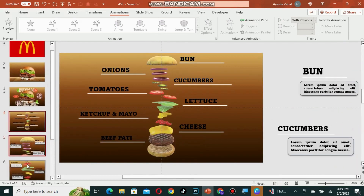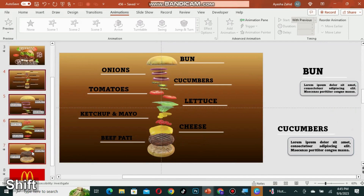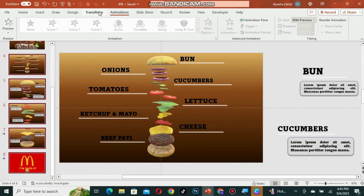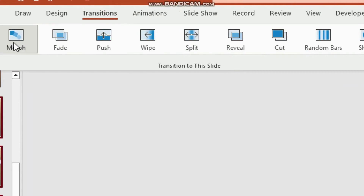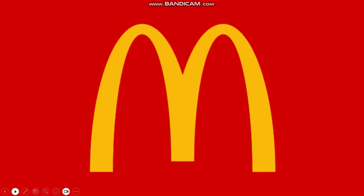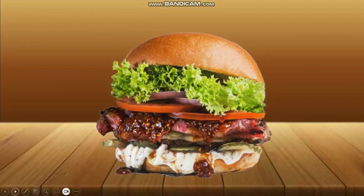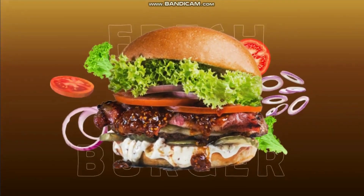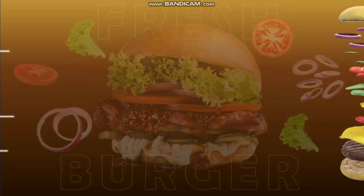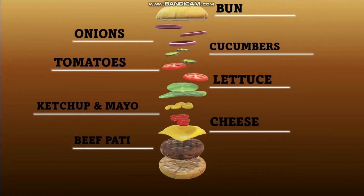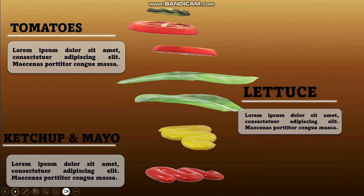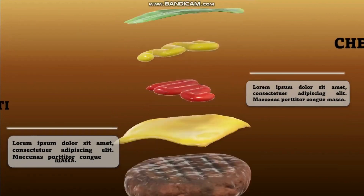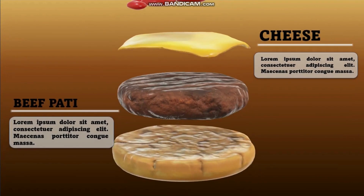Lastly, select all the remaining slides, go to Transitions, and apply morph transition. You are done with this amazing PowerPoint slide. You can add the data you want in this template. Click the link in the description to get this template for free. For more tutorials like this, subscribe to my channel. Thank you.